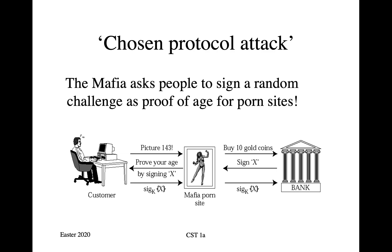And the mafia says to the punter, please prove your age by signing X. And being in a state of arousal and anticipation, he doesn't think too carefully, and he produces a digital signature on X, which the mafia then relay back to the bank. And so the bank says, fine, Mr. Customer, here's your seven gold coins. And the mafia, who control the communications, have of course given him their postal address rather than his for delivery. And a month later, when the customer gets his credit card statement, he's in for a rather rude awakening.